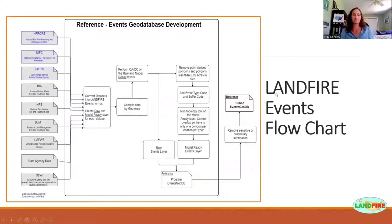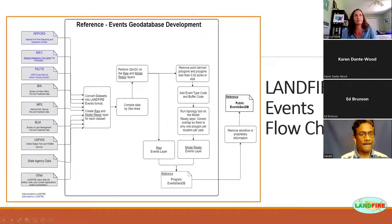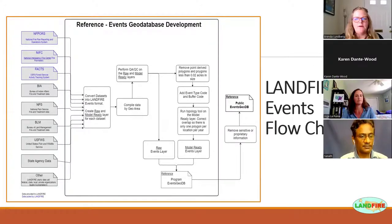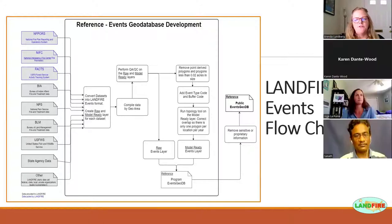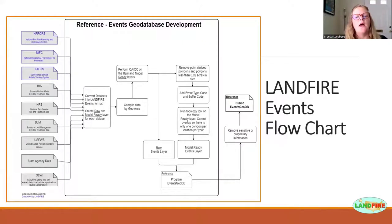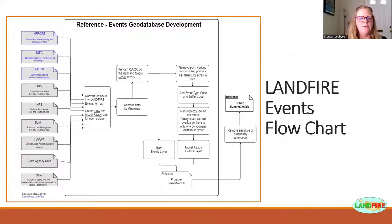The Landfire events data is a collection of disturbance and treatment polygons. Landfire puts out a yearly data call asking for disturbance and treatment polygon data, and we receive contributions and also pull data from online sources. Once datasets are gathered, we convert them into the Landfire events format, and both a raw and model-ready version are created. Once all data in a geographic region are converted into a like format, we compile the data and produce a program version of the events, and then a public version.